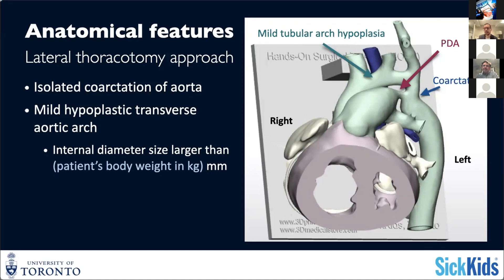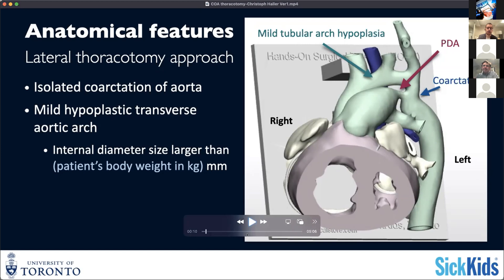We've shown that there is growth potential in the proximal arch. Speaking in Z scores, it's basically up to a Z score of minus six where you could theoretically perform a coarctation repair from the side. But obviously it needs some common judgment. If you're using such aggressive cutoffs, you will see some patients coming back with residual obstruction that needs to be addressed secondarily.